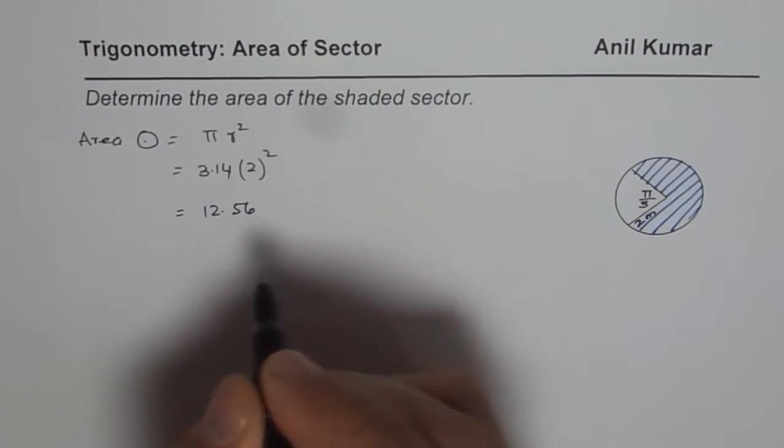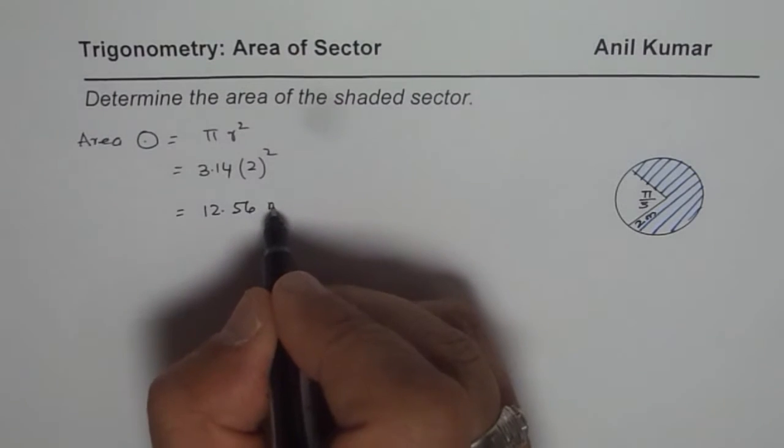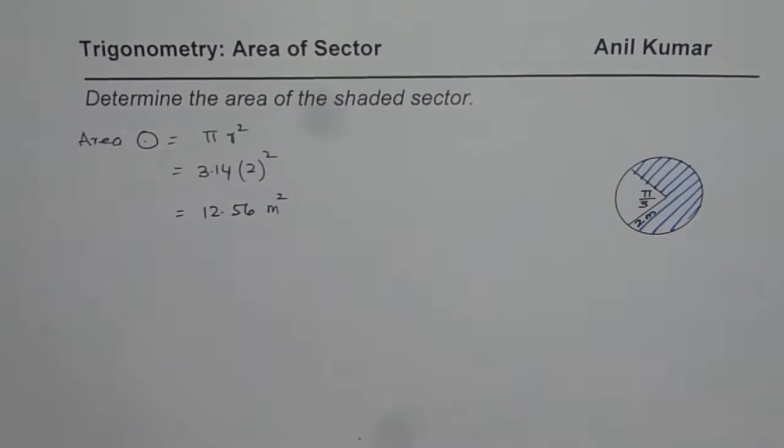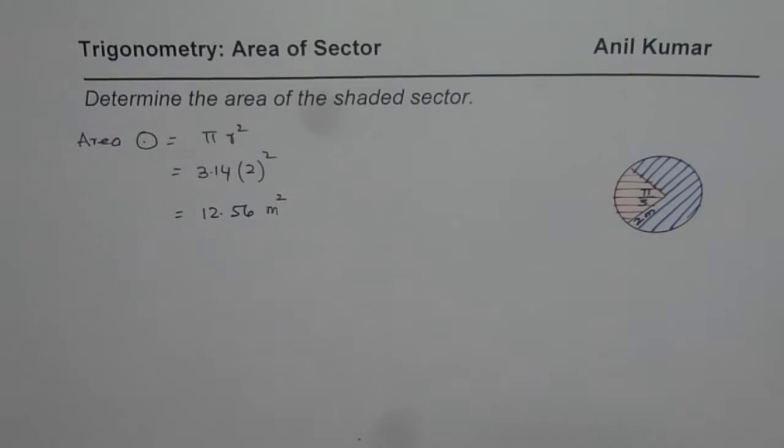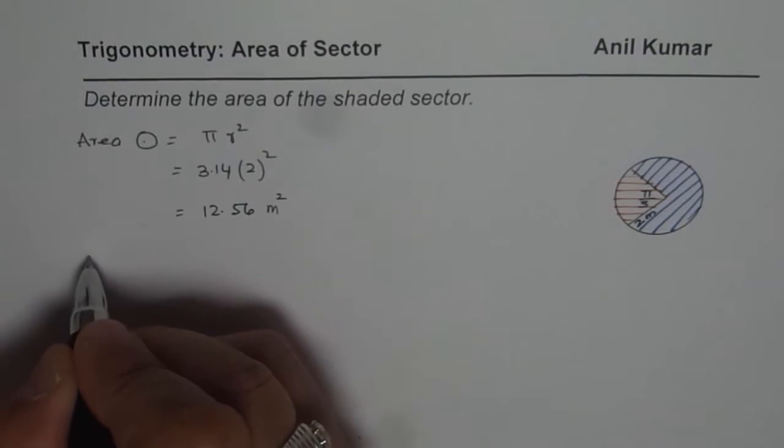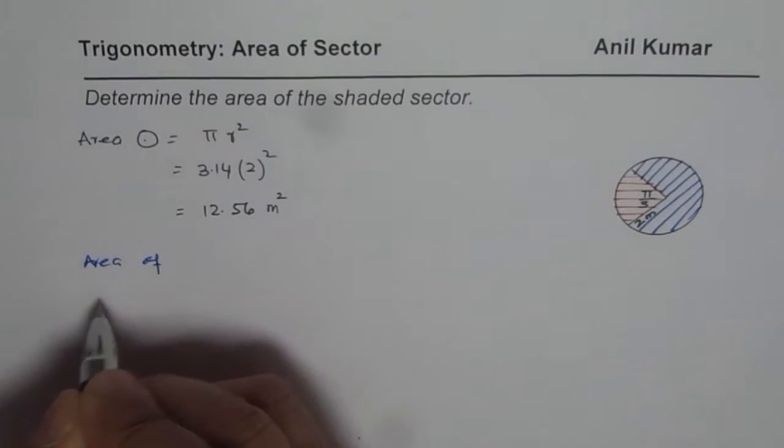That is equal to 12.56, so we get 12.56 meters squared. Now let us find the area of the sector. We can always take away area of this sector from the area of the circle to find area of the shaded portion.